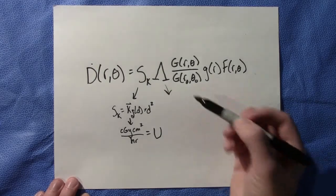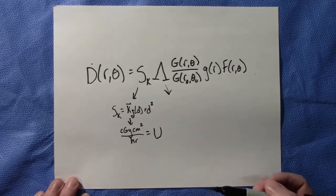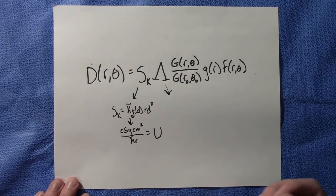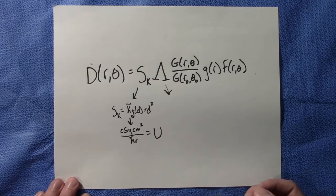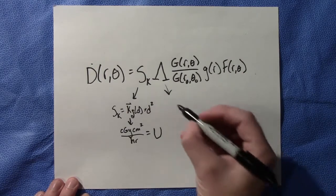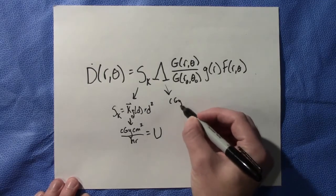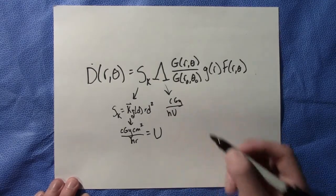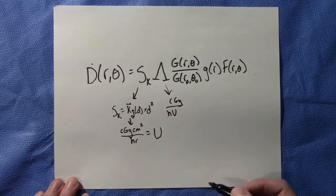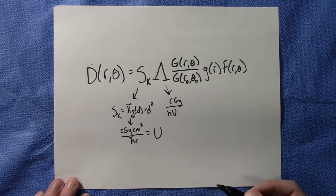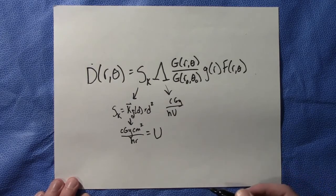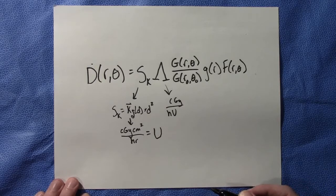Next we have our dose rate constant. This is a dose rate per unit air kerma strength at one centimeter along the transverse midplane. The units are centigrade per hour U. And this depends on the type of source that you're using, the construction of that source, and the encapsulation that is used.